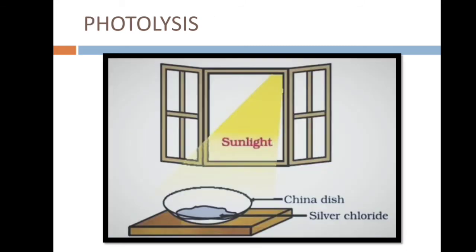Next, as you see in the picture, the white silver chloride turns gray in sunlight. This is due to the decomposition of silver chloride into silver and chlorine, and that is by the action of light. The process in which the separation of molecules occurs by the action of light is known as photolysis.